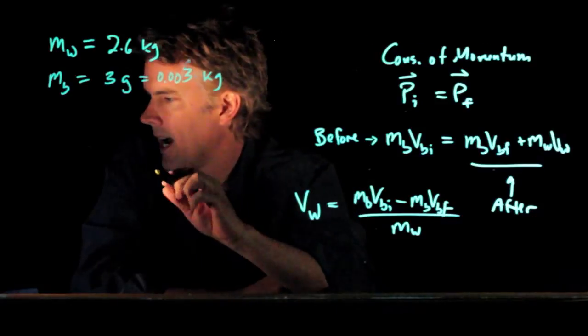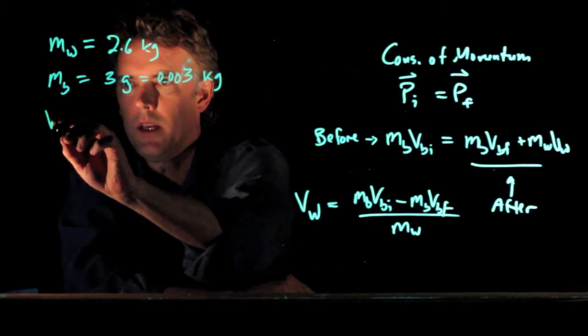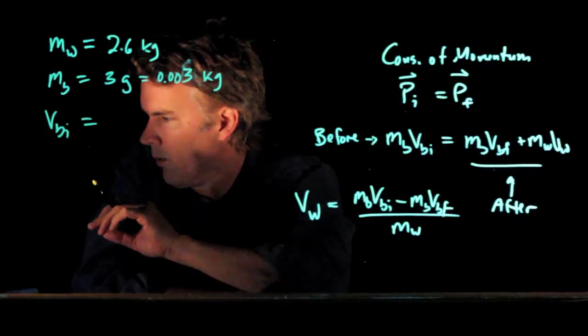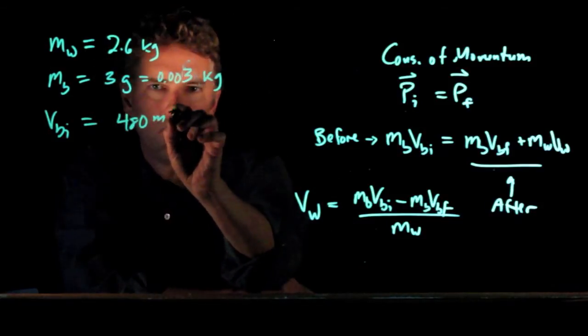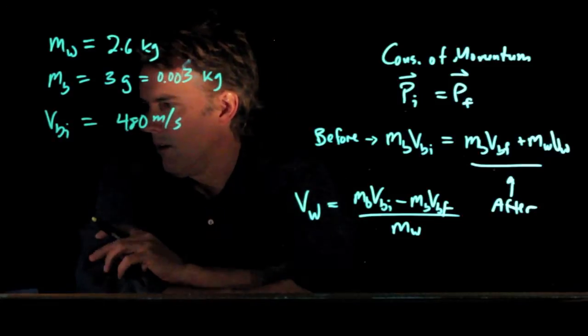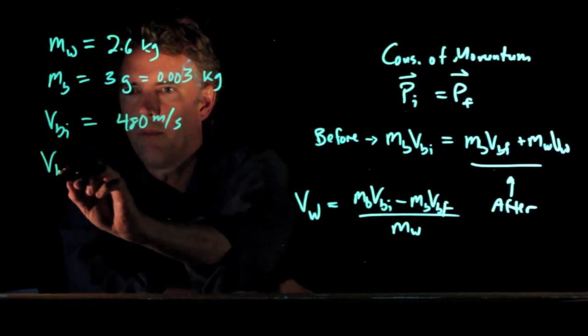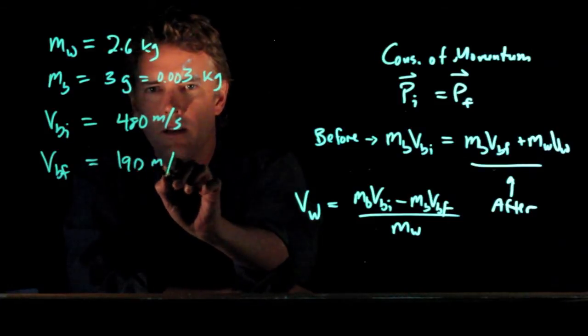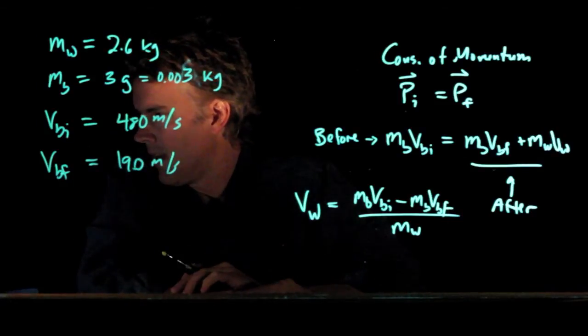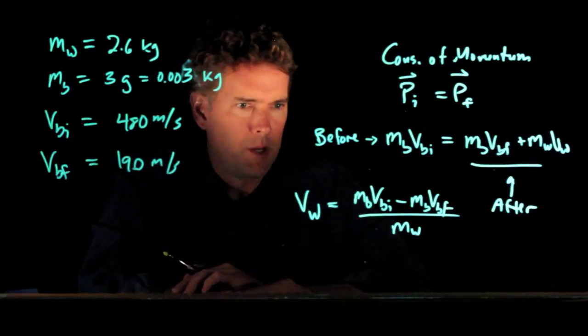We've got the speed of the bullet initially which was 480 meters per second. We've got the speed of the bullet finally which is 190 meters per second. And I believe that's all of our information.